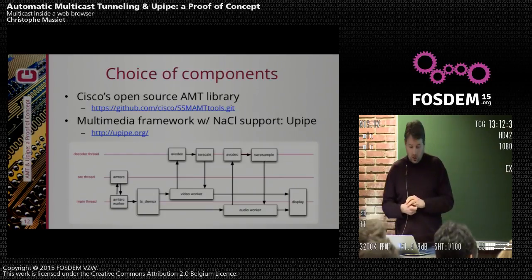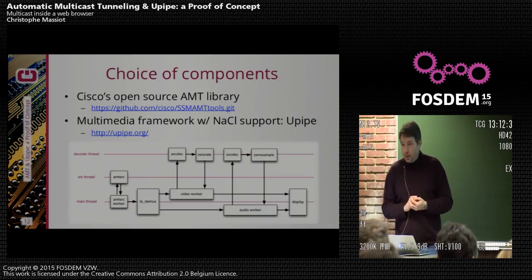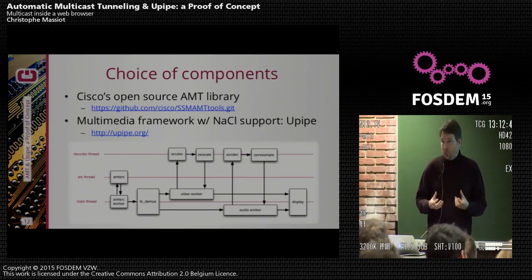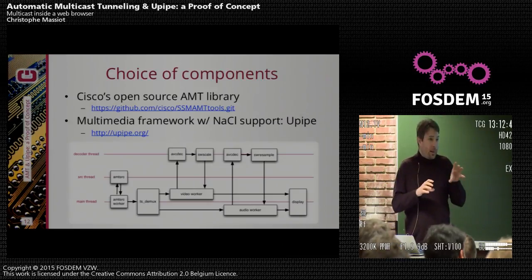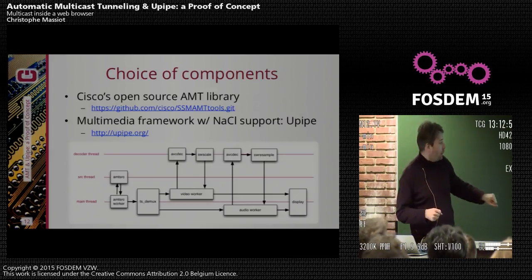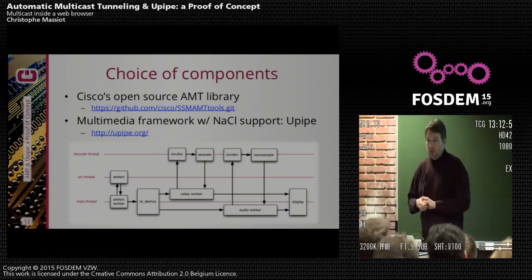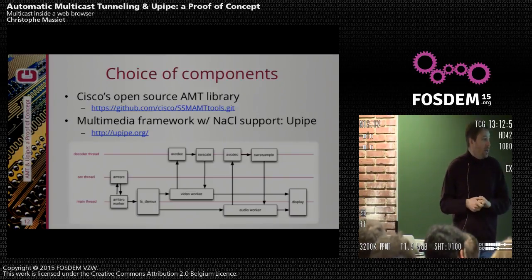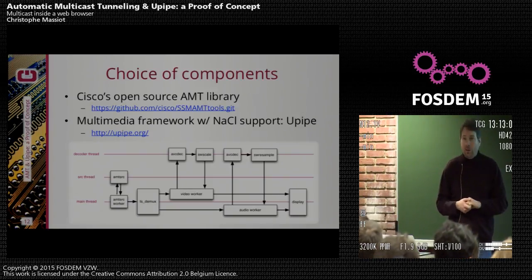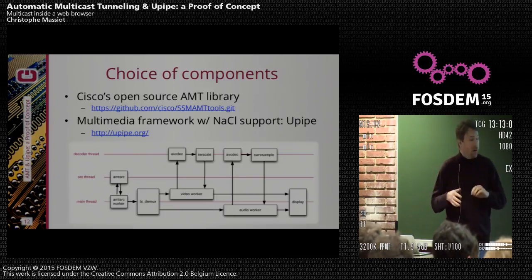We also needed a multimedia framework to bind all of these together. My project is UPipe — Kieran talked about it earlier today. UPipe is a multimedia framework that is lower level than VLC and GStreamer, and allows you to connect pipes next to each other. Here you have one pipe that is the AMT source for getting the packets, then DMUX, decoders, scaler, and resamplers from FFmpeg. We already had a display module for Native Client in UPipe, so that was used as well.